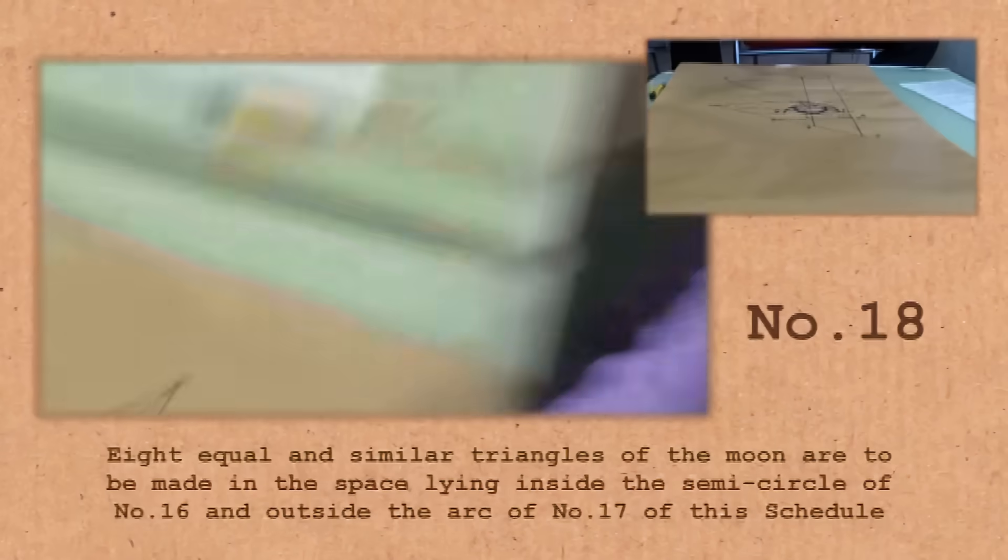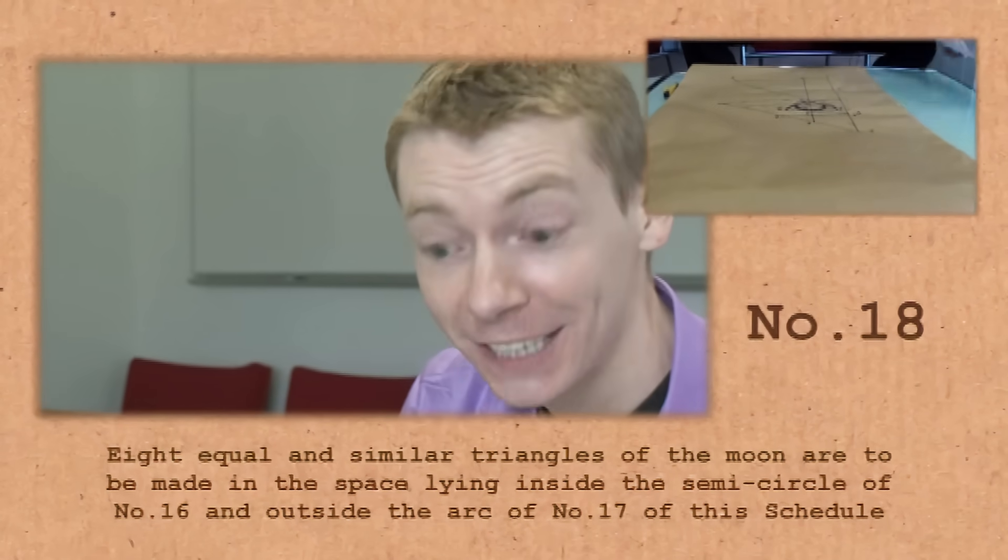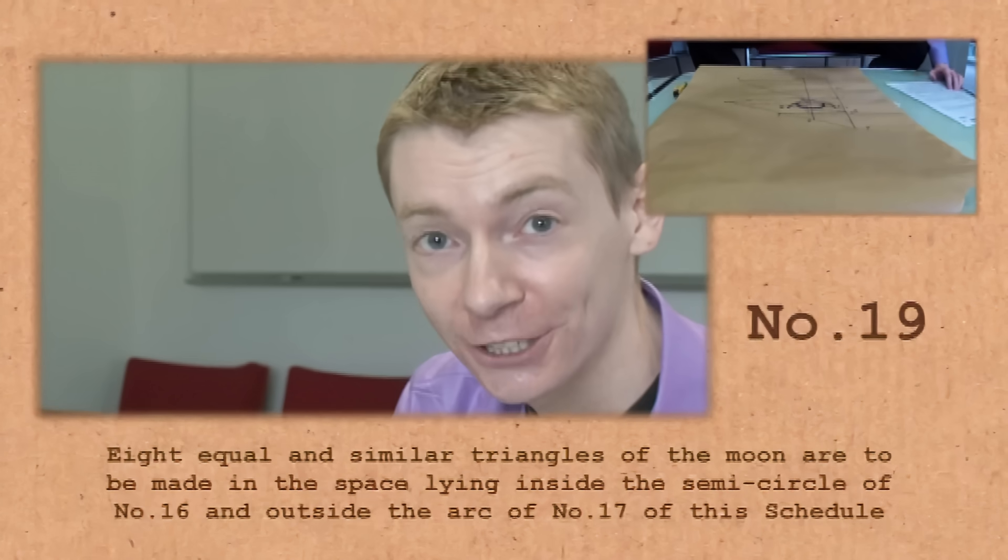Eight equal and similar triangles of the Moon are to be made in the space lying inside the semicircle of number 16. This is what mathematics was like in ancient times, the Greeks. All Greek Mathematics were written down like this. With centre T and radius TM draw an arc on the upper portion of PNQ, touching it at two points. Eight equal and similar triangles of the moon are to be made in the space lying inside the semicircle of number 16, and outside the arc of number 17 of this schedule. I made that bit up. I cheated a little bit, just a little bit. C, method of making the sun.